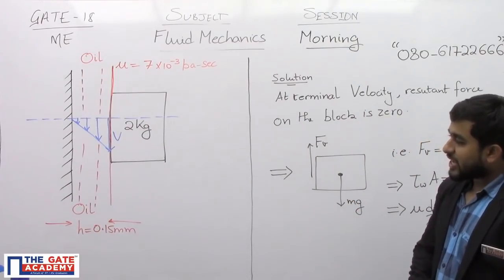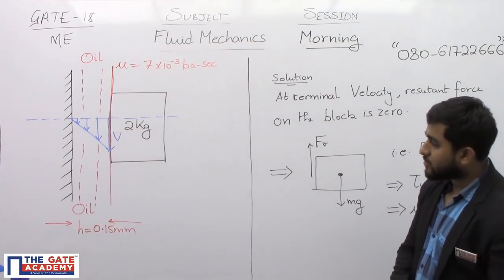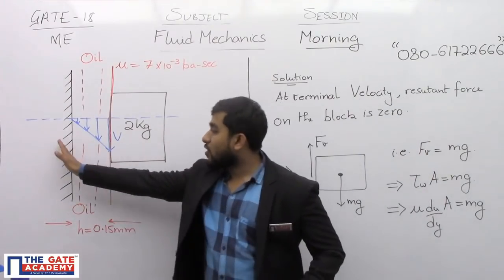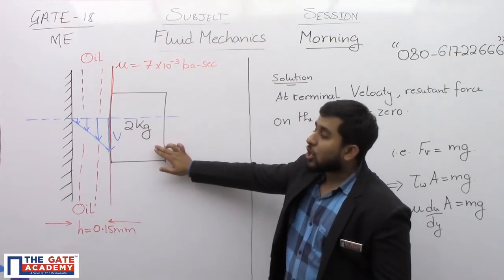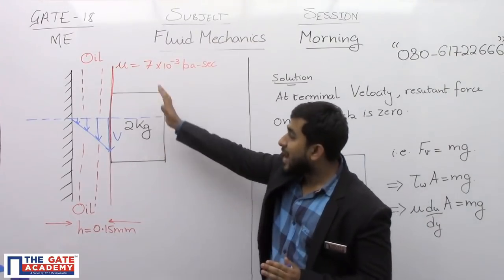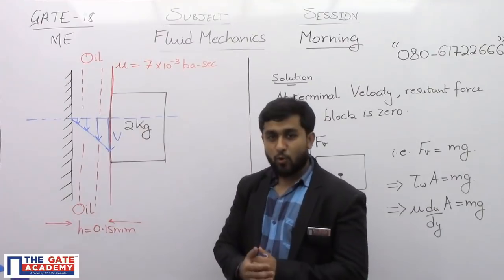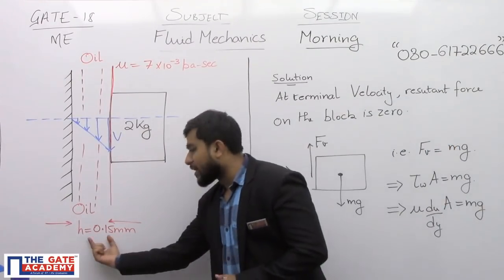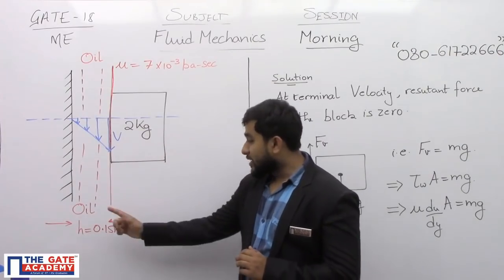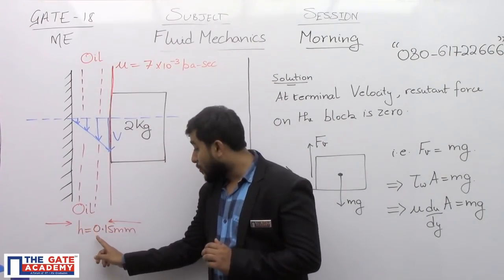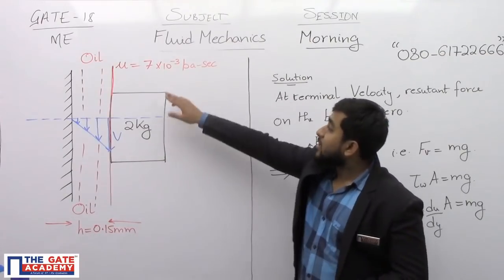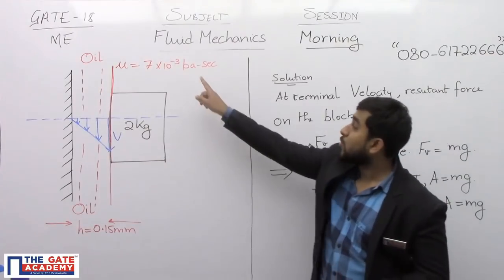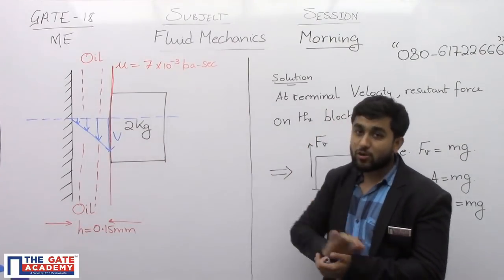What the question says is I have not written the statement. The diagram is very self-descriptive. The statement says that there is a vertical wall. This is a vertical wall and this solid block of 2 kg slides down against this wall. But the solid block and the wall are separated by a very thin layer of an oil. The thickness of that oil layer is 0.15 mm and the dynamic viscosity is 7 into 10 raised to power minus 3 Pascal second. Please note here SI units of dynamic viscosity are given.